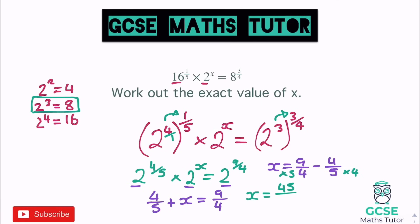So x equals 45 over 20 minus 16 over 20. Taking those away: 45 minus 16 is 29, so x equals 29 over 20. You could also convert that to a mixed number: 1 and 9 twentieths, since 20 goes into 29 once with a remainder of 9. Either form is acceptable as the exact value of x.